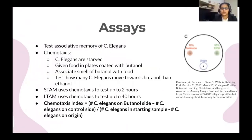We will be running assays to test the associative memory of C. elegans. In chemotaxis, the C. elegans are starved and then given food on plates with butanol. This causes the C. elegans to form an association between the food and the smell of butanol. We will then place the C. elegans on another plate where there will be a neutral substance and butanol. Using the chemotaxis index equation, which looks at how many C. elegans move towards the butanol, we can test how long their associative memory lasts. Short-term associative assay will use chemotaxis to test their memory for up to two hours, and long-term associative assay will use chemotaxis to test their long-term memory for up to 40 hours.